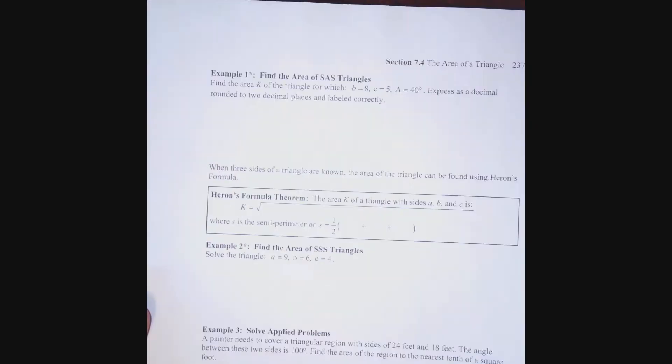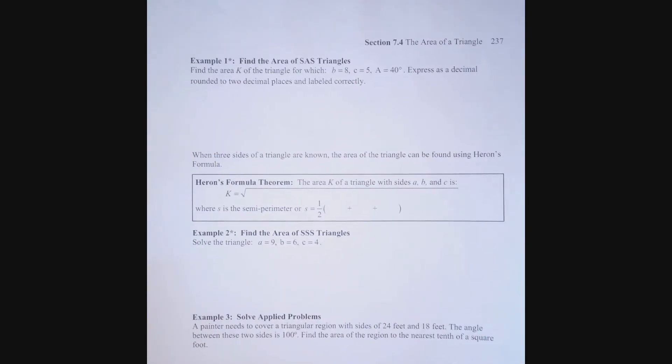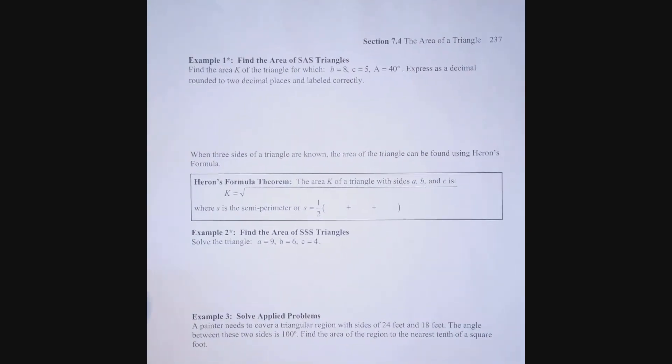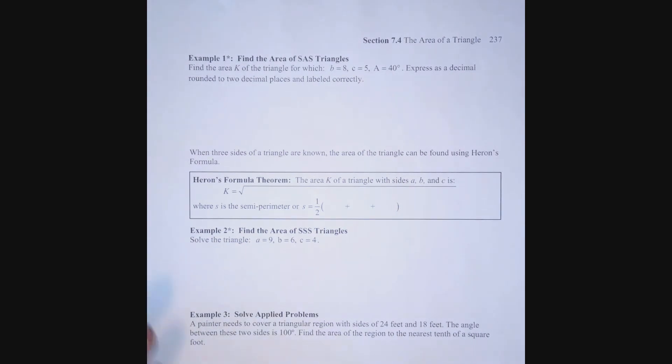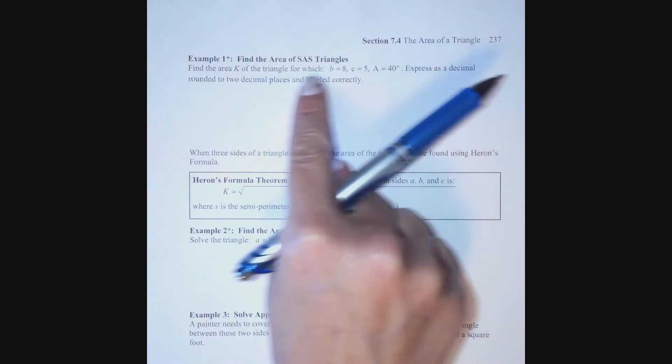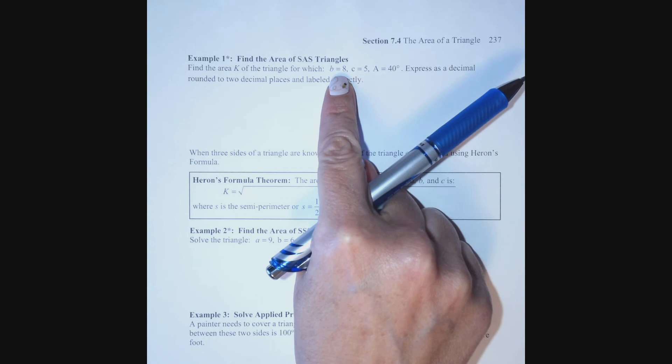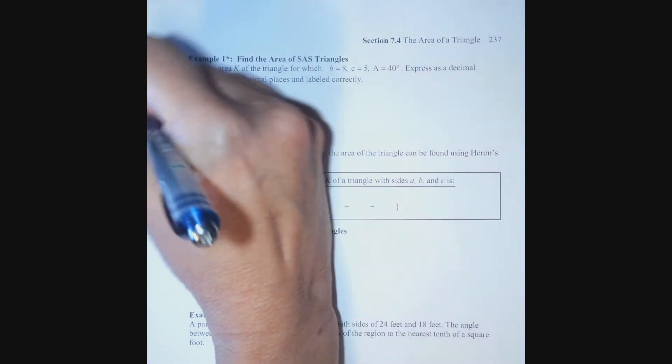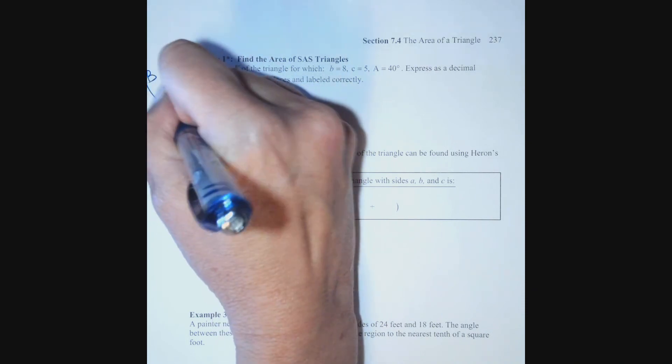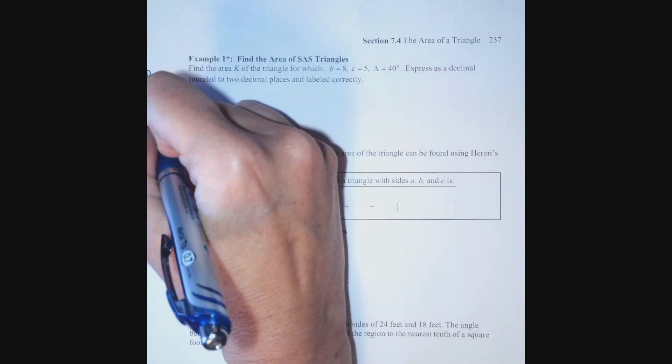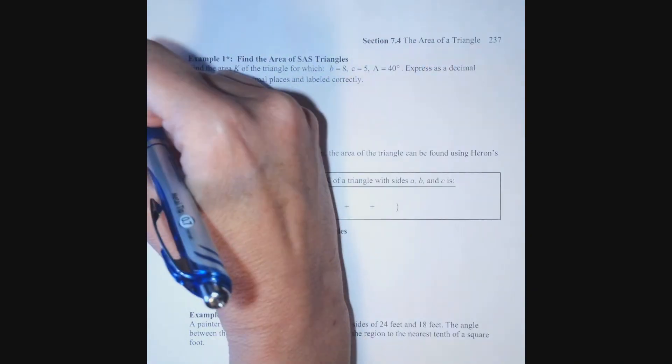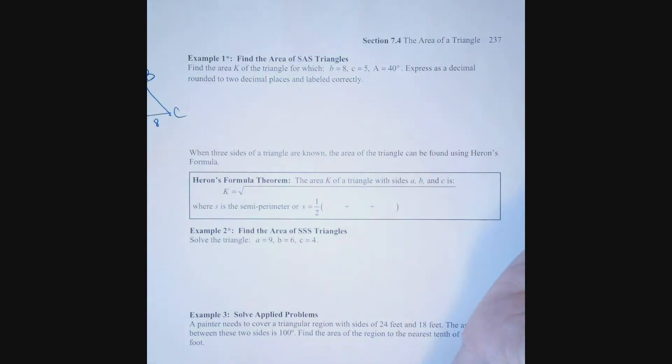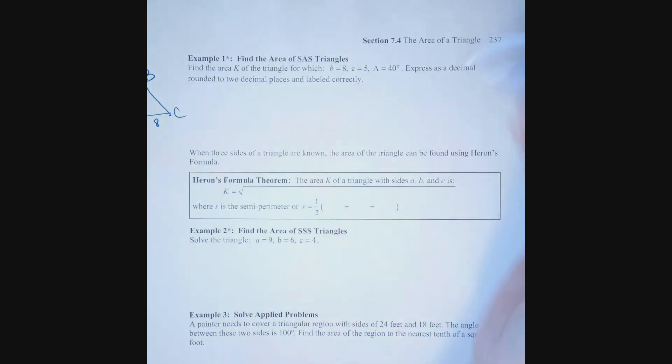Okay, let's put that to use, and then we're going to look at an alternate area formula of our triangle. Okay, so find the area K of a triangle for which I know side B, side C, and angle A. Well, let's just think about this. If I have A, B, C, and I know side B is 8, and I know side C is 5, and I know that angle A is 40 degrees. I have side, angle, side.